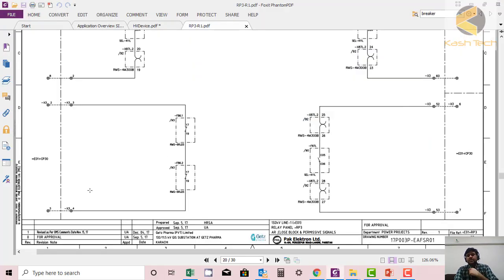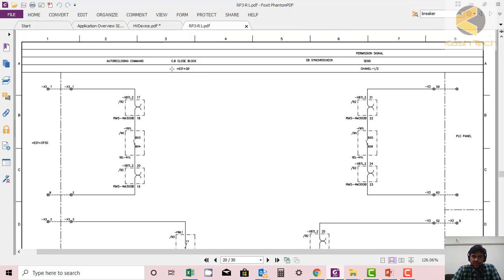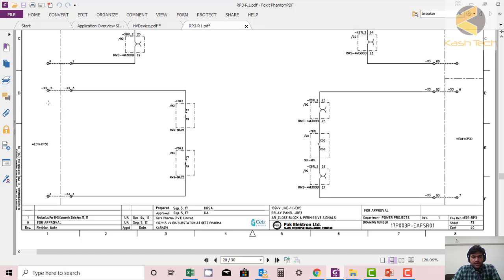Let's see how the lockouts are implemented in the drawing. I have opened the protection panel drawing in RP3. In this one you can see close CB, close block is mentioned here and this CB close block is for E01 plus Q0. You can see the closing supply which is basically controlling supply for the breaker.